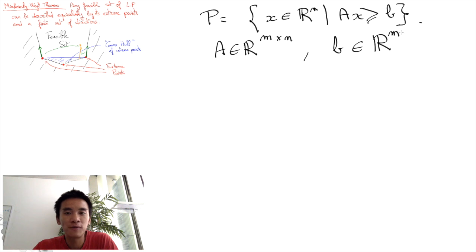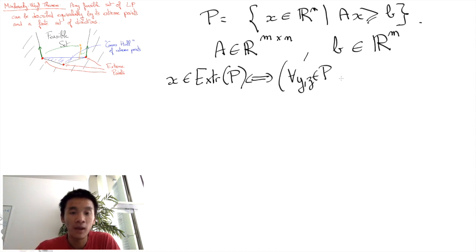Second, we need to define what an extreme point is. An extreme point of P is a point that intuitively is not in between any two other points in P. More formally, we say that x is an extreme point of P if it belongs to P, and if for any two other points y and z of P, if x is in between y and z, meaning x is equal to lambda y plus 1 minus lambda z for some lambda in (0,1), then either y is equal to x or z is equal to x.